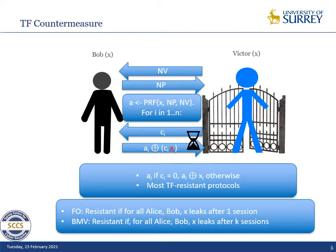How can we prevent this? In distance bounding, we make the assumption that Bob does not want Alice to impersonate him in later sessions. Otherwise there is a trivial attack we can't do anything about. We generally assume in terms of terrorist fraud that Bob knows his key, and if he knows his key, he can simply give it to Alice.